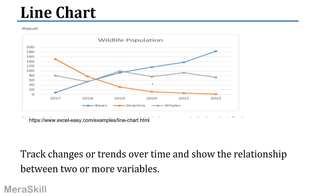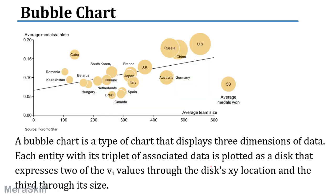A line chart depicts changes over time. For example, it can show wildlife population trends for dolphins and bears. A line chart tracks changes of things over time and shows the relationship between two or more variables.